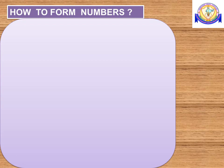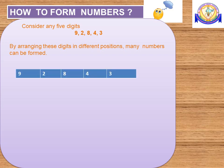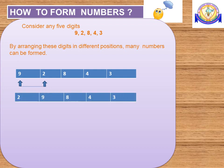We will see how to form numbers from the given digits. Consider any 5 digits: 9, 2, 8, 4, 3. We have to form new numbers from these 5 digits. The first number is 92,843. If I interchange 9 and 2, then I will get a new number 29,843.